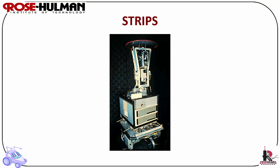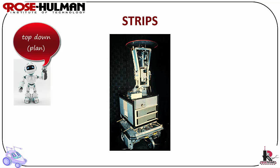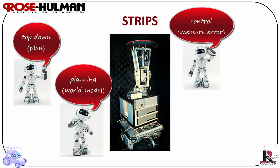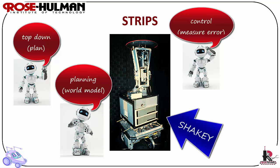There are three hierarchical paradigms including top-down or plan, control which is to measure the error, or planning which is world model. The first deliberative control architecture was used by Shakey in the 1970s and it was called STRIPS. Shakey used the STRIPS algorithm for planning how to accomplish goals. This was a means-end analysis — one way of measuring the error that chose actions to reduce the difference between the initial state and the goal state. STRIPS was inspired by the cognitive behavior in humans.